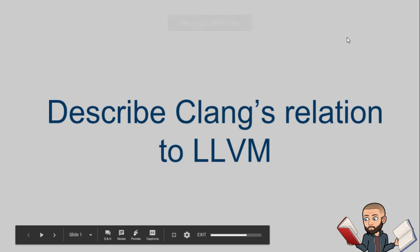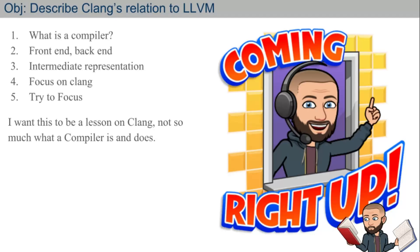The objective today is to describe Clang's relation to LLVM. It's going to be tough to stay on time because I love compilers and understanding how they relate to everything I know about computers. I'm looking for people to describe how Clang, a front end of a compiler, relates to the back end, in this case LLVM.